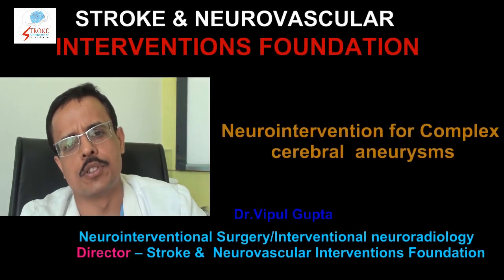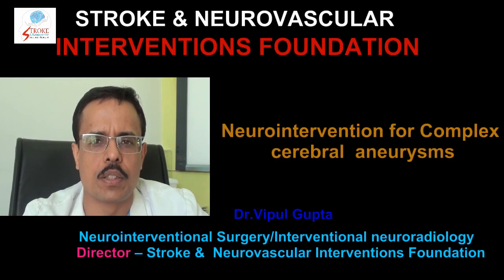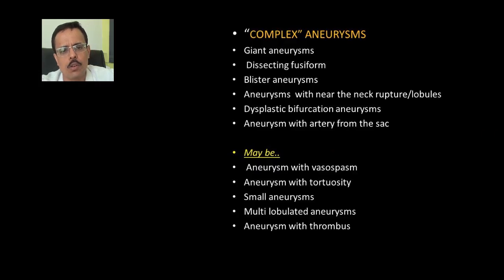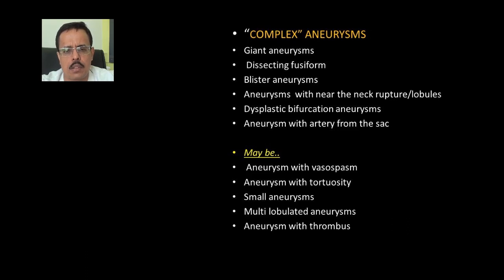Welcome to this teaching video on neuro intervention for complex cerebral aneurysms. What do we mean by complex aneurysms? The giant aneurysms, the dissecting aneurysms, blister aneurysms, aneurysms with near-the-neck rupture, dysplastic bifurcation, and aneurysm with artery from the sac are the ones which we regard as complex aneurysms.